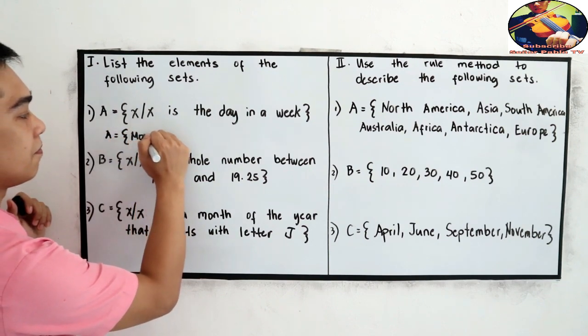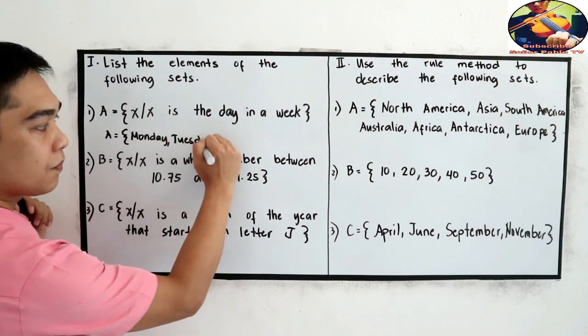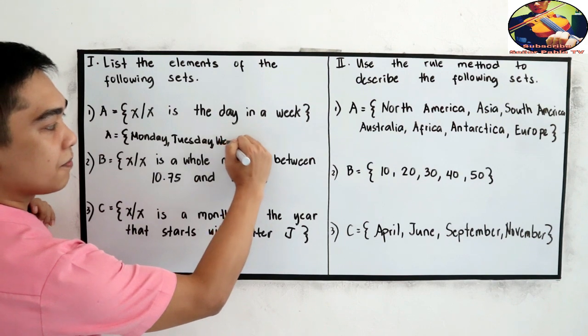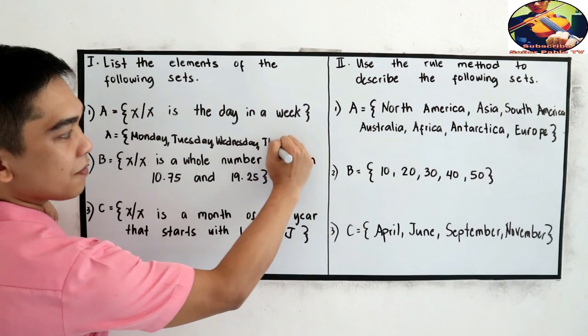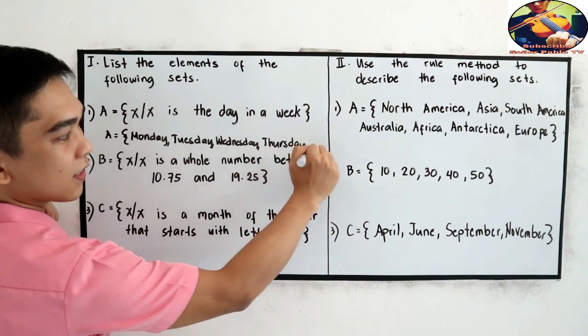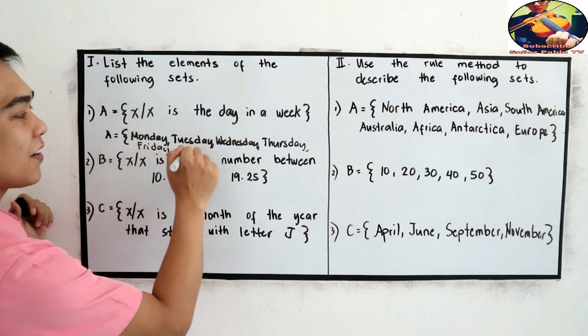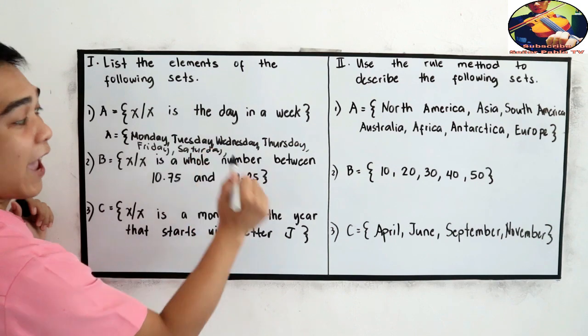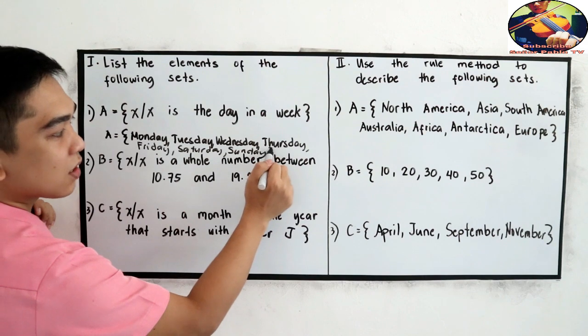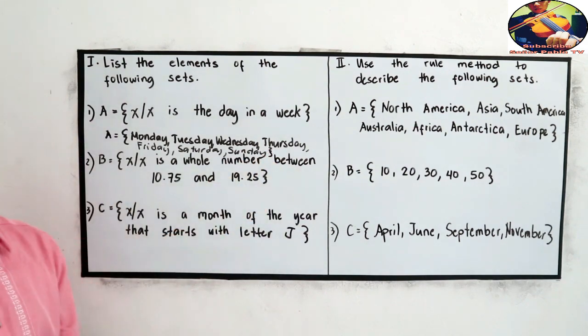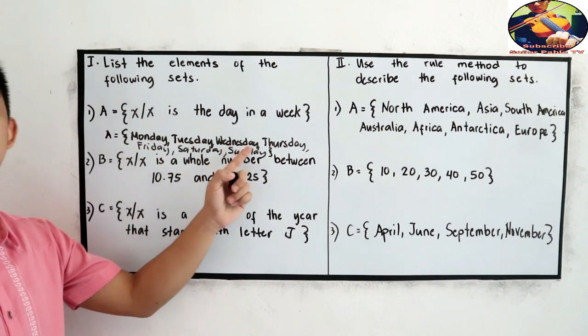Days in a week so that is A is equal to Monday, Tuesday, Wednesday, Thursday, Friday, Saturday and Sunday. Don't forget to enclose with a bracket sign. So, days in a week Monday Tuesday Wednesday Thursday Friday Saturday and Sunday.